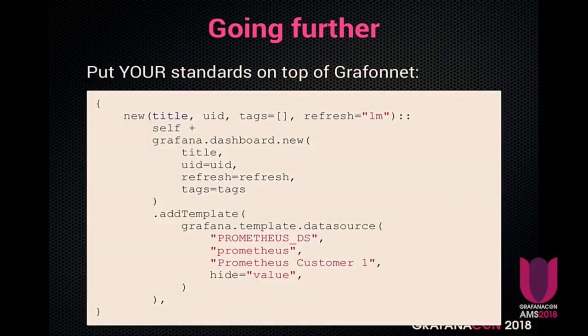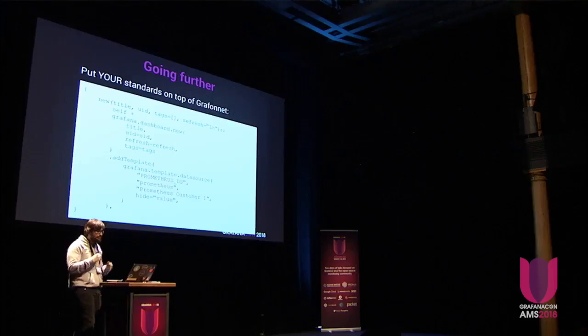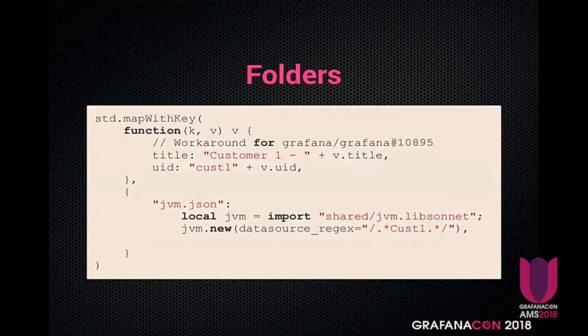If you want to go further, you can build on top of Grafonnet your own dashboard structure. For example, we know that for each customer we have two Prometheus servers, and we always want a template that lets you choose which server to use. So on each dashboard we just say 'we want a Prometheus template' and it's there by default on all dashboards. If you want to change some parameters, like the refresh time for a specific dashboard, you can do that when you call it. When it comes to folders, you can automatically add the customer name to every dashboard title and change the dashboard UID to be prefixed by the customer name — at the folder level rather than the dashboard level.